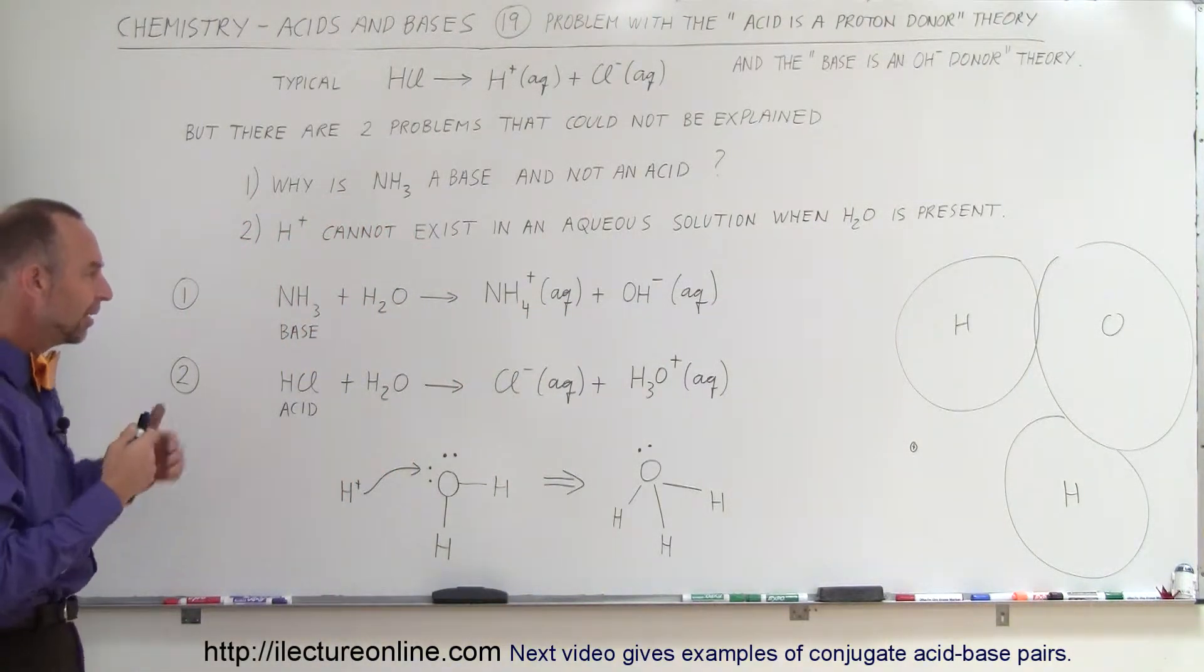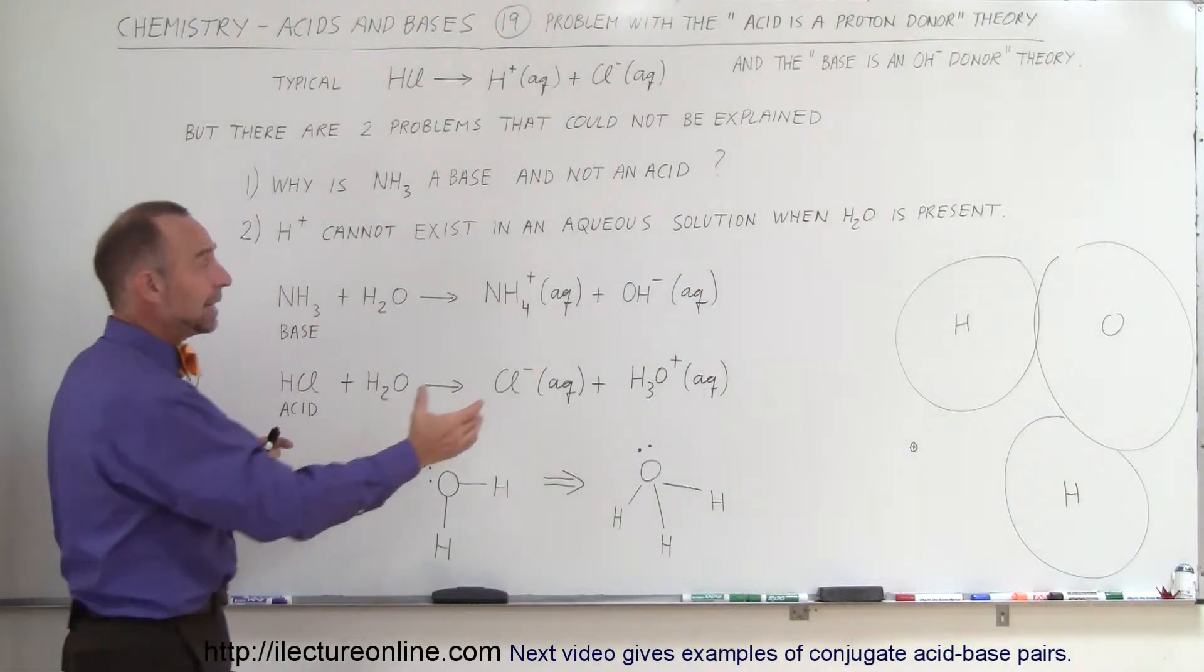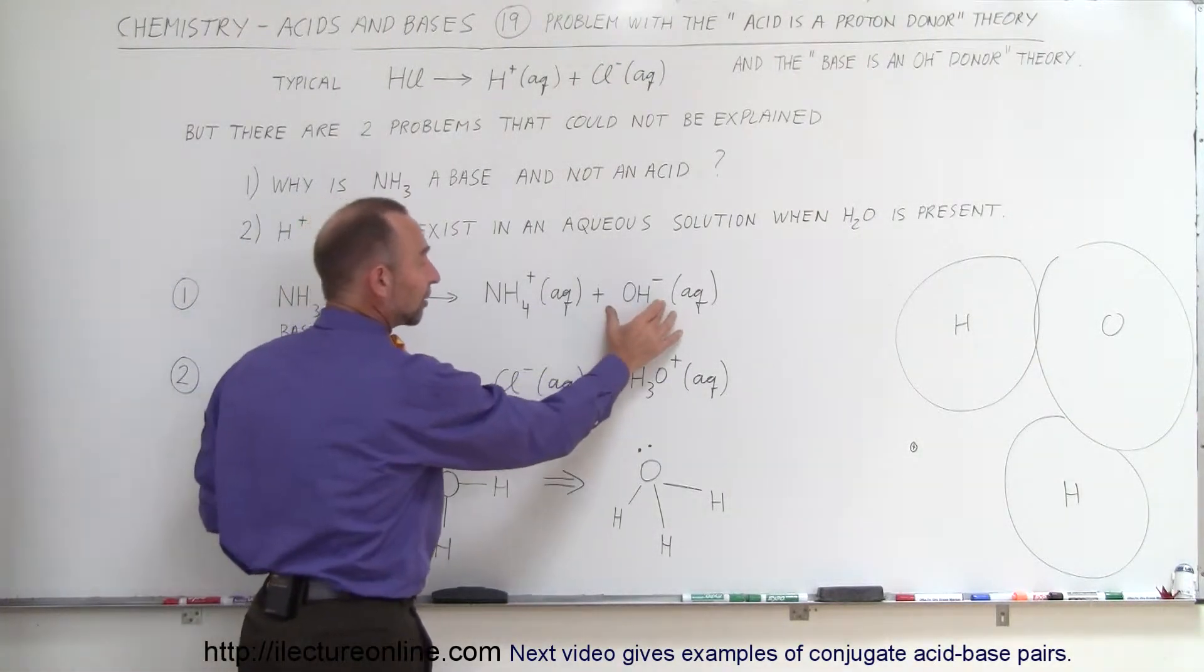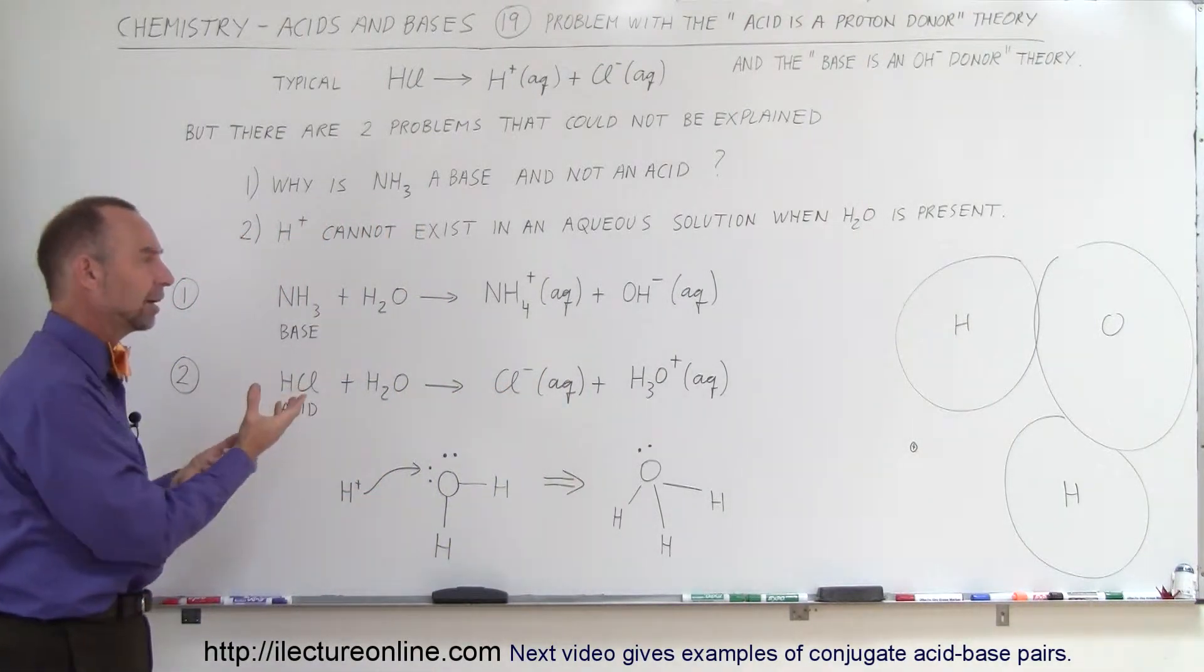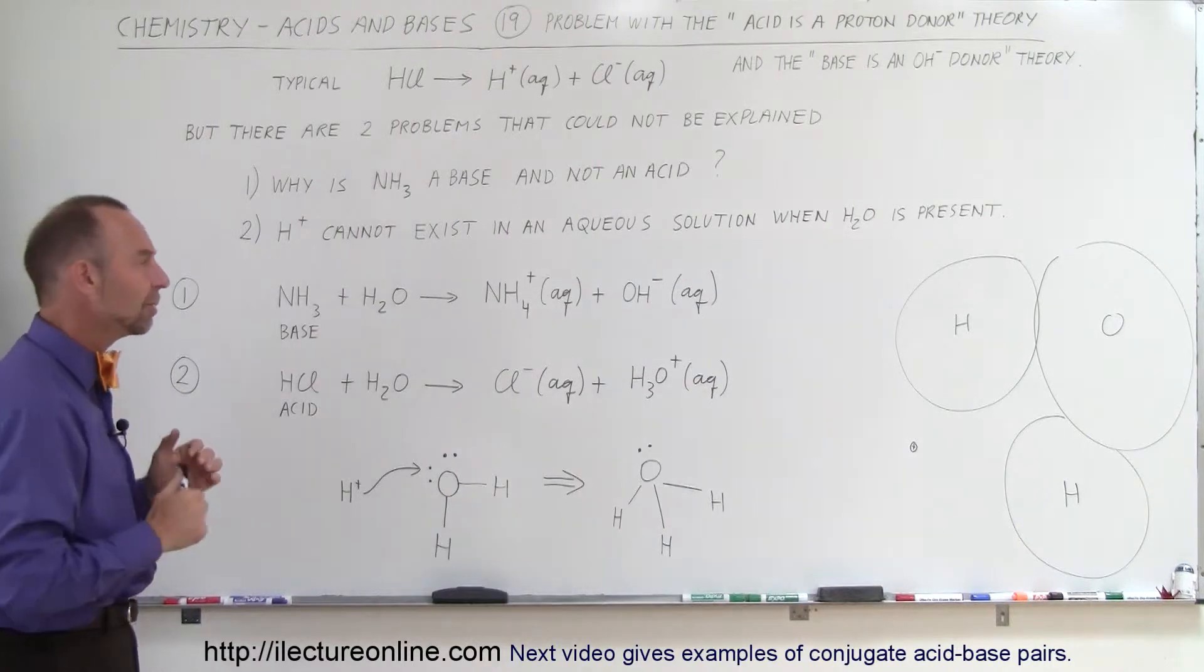So ammonia is still a base because in the end it increases the concentration of hydroxide ions, but not by donating the hydroxide ions or hydrogen ions. So that's where the theory doesn't seem to work.